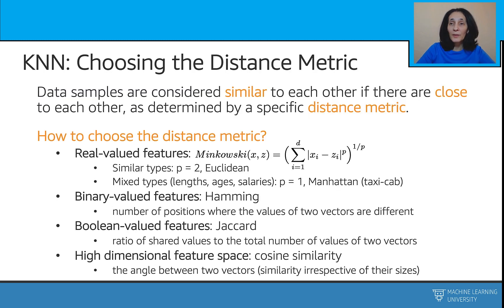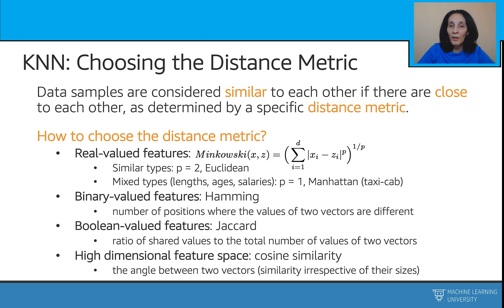Finding the closest similar points is key to this algorithm. This means finding the distance between points using distance measures, such as the default Minkowski with p equals 2, which is the Euclidean distance — well suited for real-valued vector spaces, particularly numerical values of similar types like length, height, or width. The Minkowski metric with p equals 1, known as the Manhattan or taxicab distance, is better suited for real-valued features of mixed type, like age, length, or salaries.